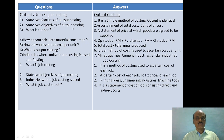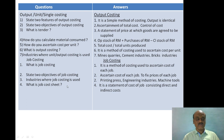The probable questions include: state two objectives of output costing, what is tender, how do you calculate material consumed, how do you ascertain cost per unit, what is output costing, industries where unit or output costing is used, what is job costing, state two objectives of job costing, industries where job costing is used, and what is the meaning of cost.